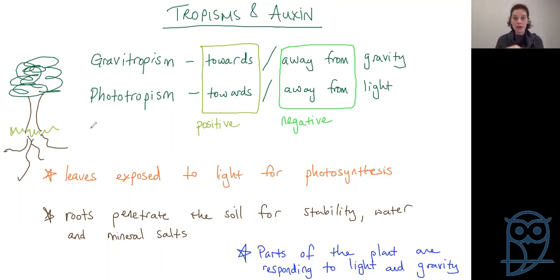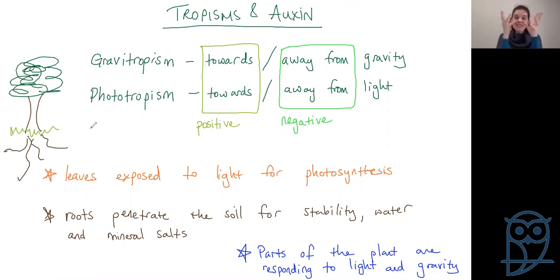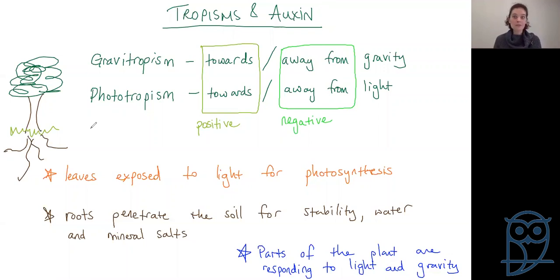When we're talking about gravitropism and phototropism, we're talking about parts of the plant responding to light and gravity — in particular, shoots and roots. Shoots are those brand new baby pieces of plant, bright green and still growing into their first leaves. Roots are standard roots underground. We're looking at simplified things and not worrying about things that grow sideways at this stage. So — plant's got to grow up, plant's got to grow down — how does it know what to do? That's where auxin comes in.